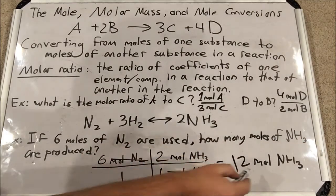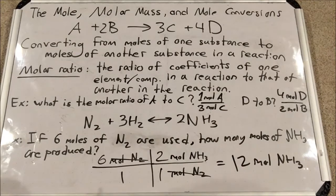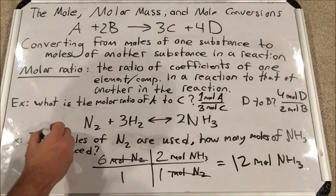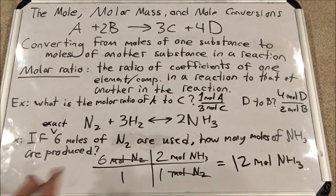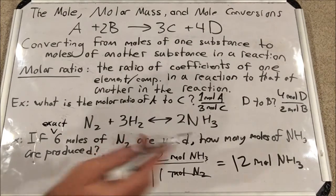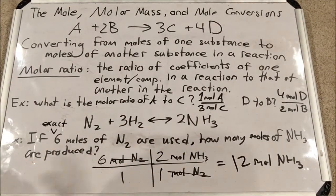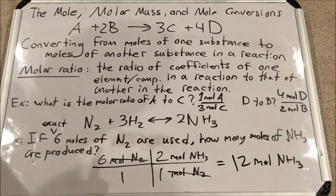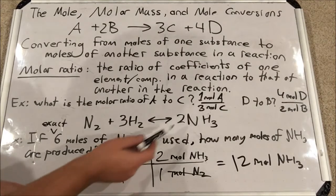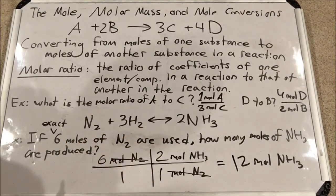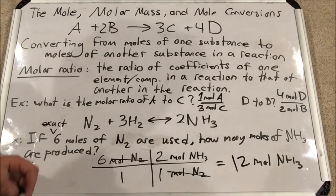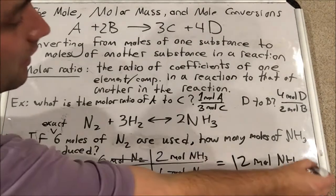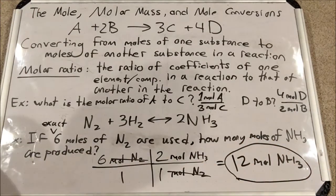Since we're assuming the 6 is an exact number with an infinite number of sig figs, and the coefficients are also exact, we keep 12 moles NH3 as our answer. So 12 moles of NH3 are produced when we use 6 moles of N2.